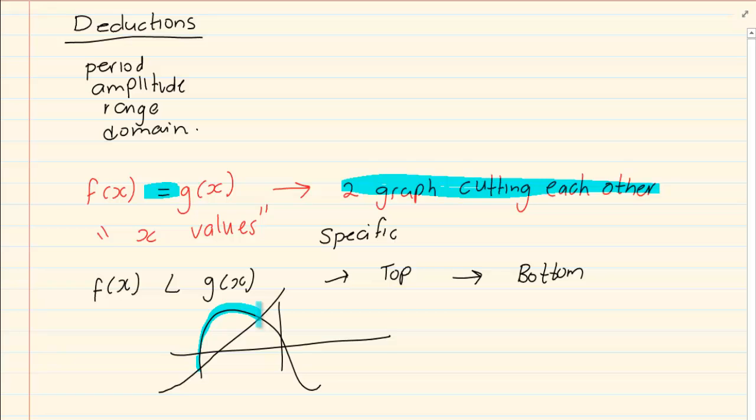It's a range of answers. So you can't say x = −4, x = 3, or x = 1. It's running from one point to another.